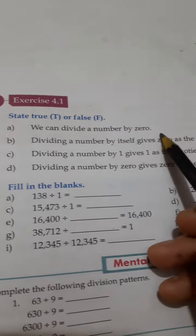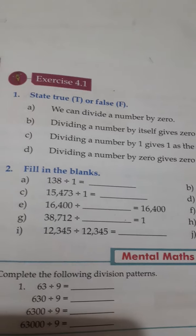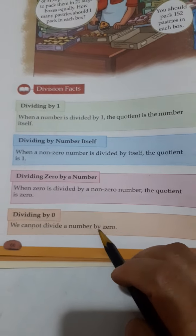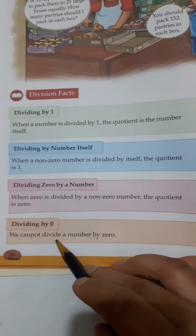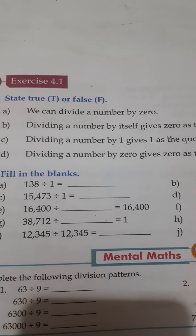We can divide a number by 0. Yes, we can divide a number by 0. See, here is written, we cannot divide a number by 0. So, here it is written, we can divide a number by 0. No. So, that is, it is false.